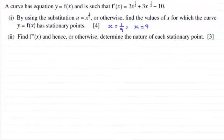Hi there. In the previous part of this question, we were given that y equals some function of x, and we were told the first differential f'(x) was equal to 3x^(1/2) + 3x^(-1/2) - 10. We were asked to use the substitution u = x^(1/2) to find the values of x which gave y = f(x) stationary points, and we found the answer was x = 1/9 or x = 9.